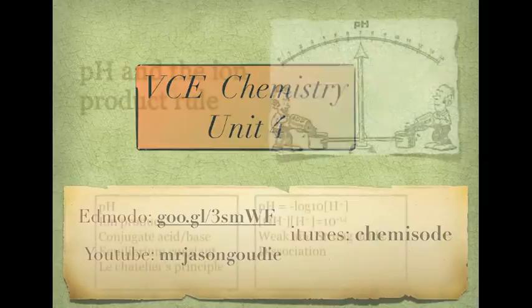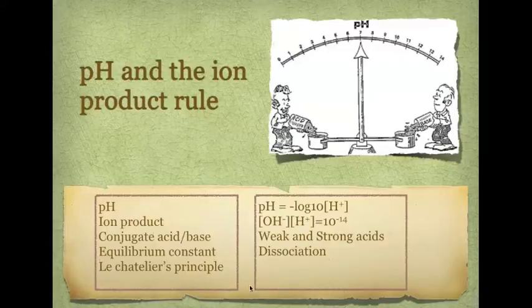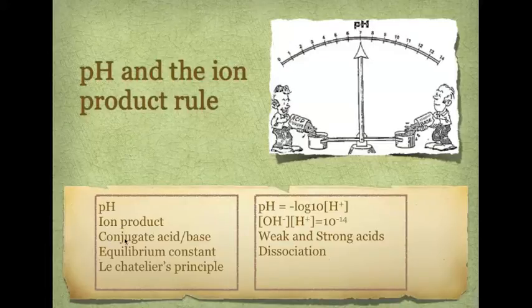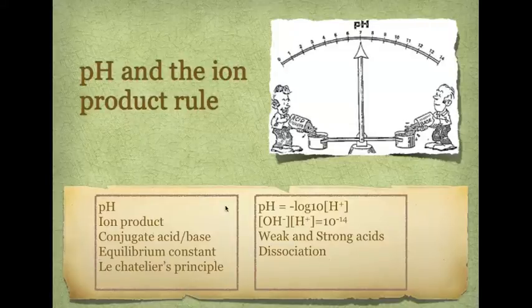So, acidity constants and pH and the ion product rule. These are the things you're going to learn about in terms of acids and bases in this podcast. You're going to learn about pH, you're going to remember a few things about pH. You're going to learn the ion product rule. You're going to learn conjugate acids and bases, the equilibrium constant. You should know about Le Chatelier's Principle, a bit about that. You need to know about these things from your year 11 acids and bases stuff as well.